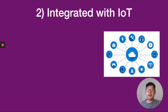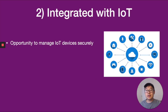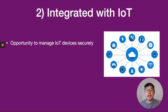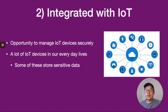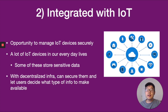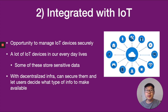Number two is that DID can be integrated with the Internet of Things. With a DID system, we have the opportunity to manage IoT devices securely. There are a lot more IoT devices in our everyday lives now, and some of these store sensitive data about us and our usage. With a decentralized infrastructure, we can secure them and let users decide what type of info to make available to these devices and in what situations.